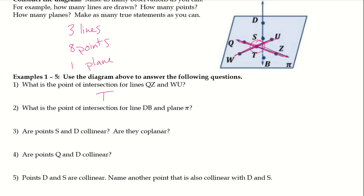What is the point of intersection for line DB and plane pi? We have plane pi — it tells us what plane it is right there in the corner. And we're taking a look at line DB, this line right here. Since all three of these points lie on the plane, all three of these points are intersections: D, S, and B.